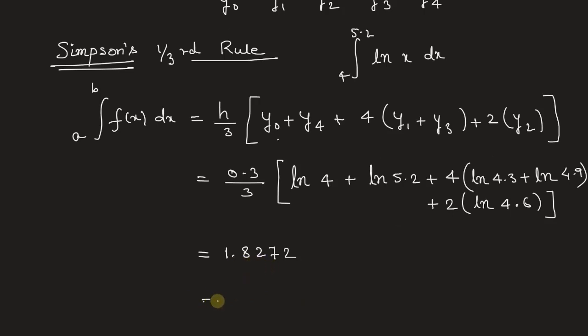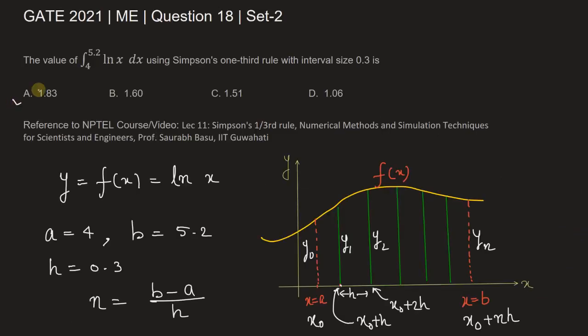If we round off the value to two decimal places, we will get 1.83, which is our final answer. The integral from 4 to 5.2 of ln x dx is approximately equal to 1.83. So option A is the correct answer.